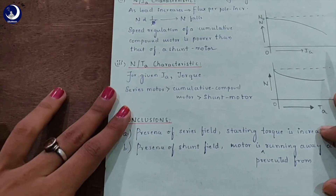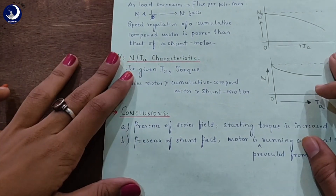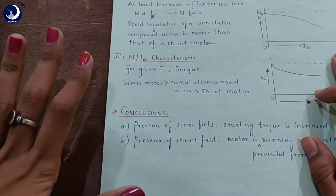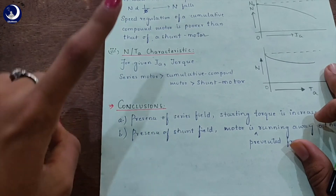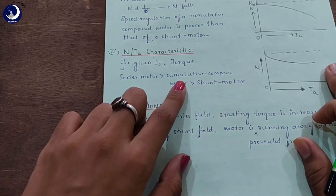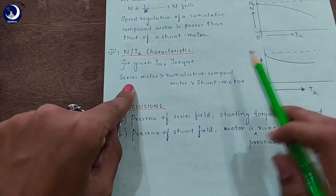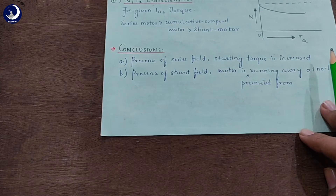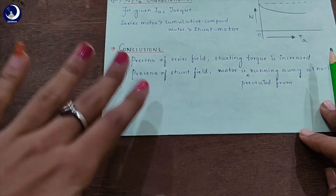Coming to the third characteristic, it is the speed and the armature torque characteristic. This graph shows the N-TA characteristic of a cumulative compound motor. For a given armature current, the torque of a cumulative compound motor is more than that of a shunt motor but less than that of a series motor. The conclusion is that this cumulative compound motor has characteristics intermediate between the series and the shunt motor.